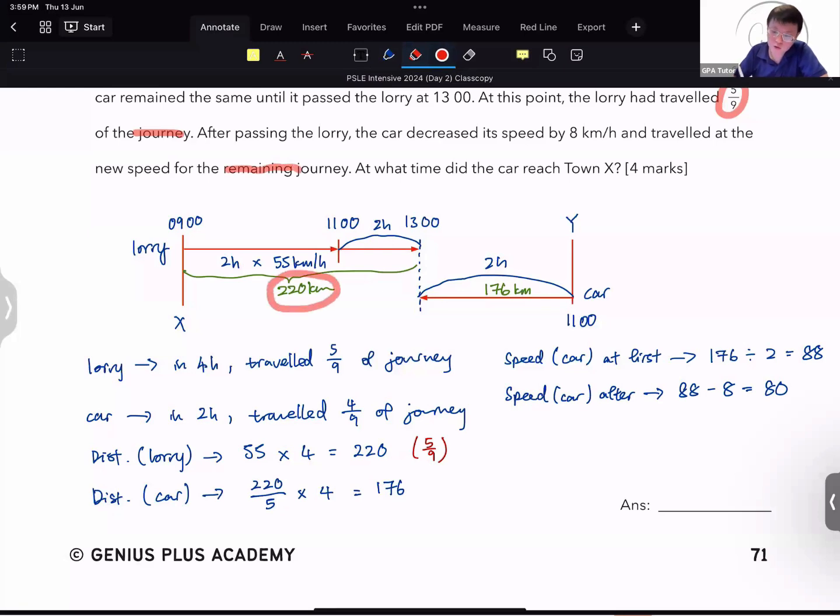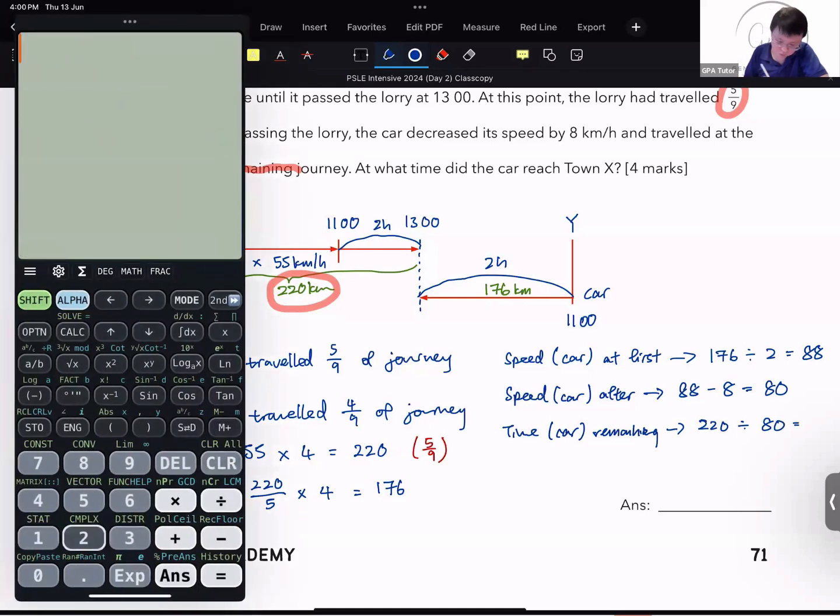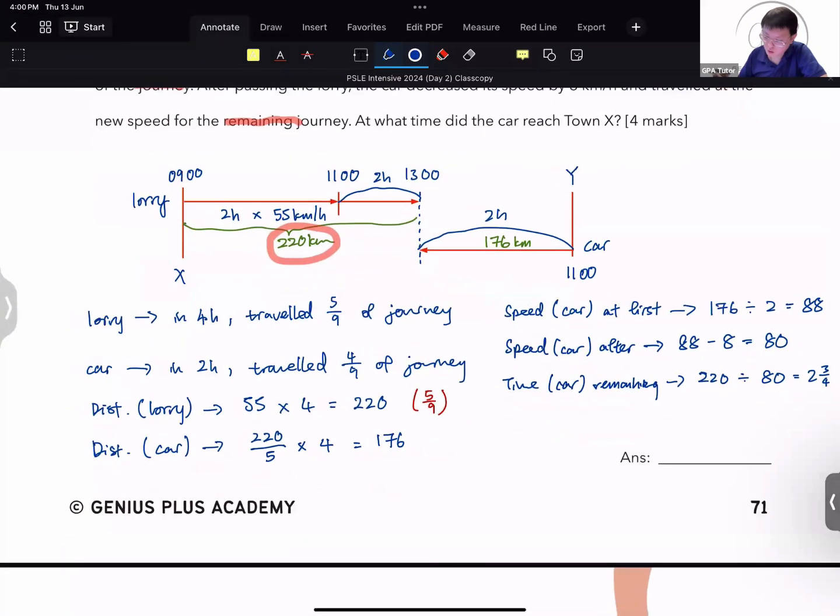It traveled at a new speed for the remaining journey. What is the remaining journey? The remaining journey is the 220 km that is traveled by the lorry. That is the distance that the car has not traveled. And so time taken by car for remaining journey is simply distance, which is 220, divided by speed, which is 80. And you will find that that will give you 2 and 3 quarter of an hour. 2 and 3 quarter of an hour is equal to 2 hour and 45 minutes.